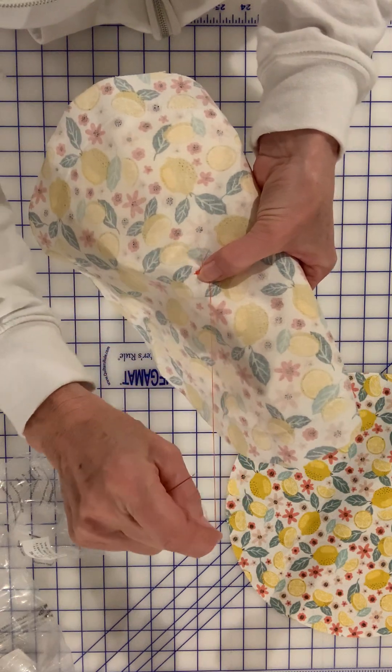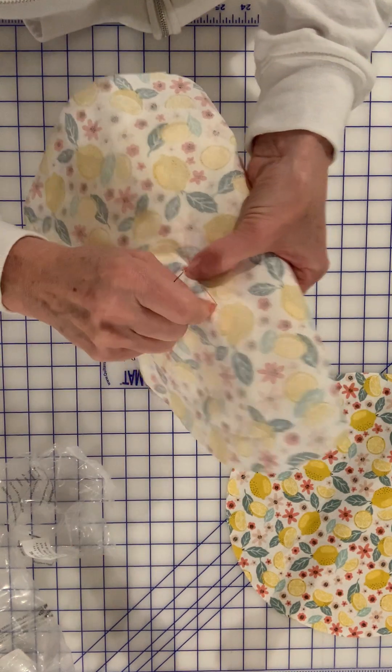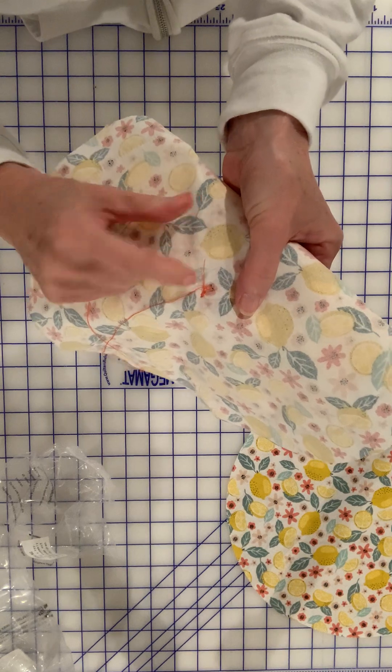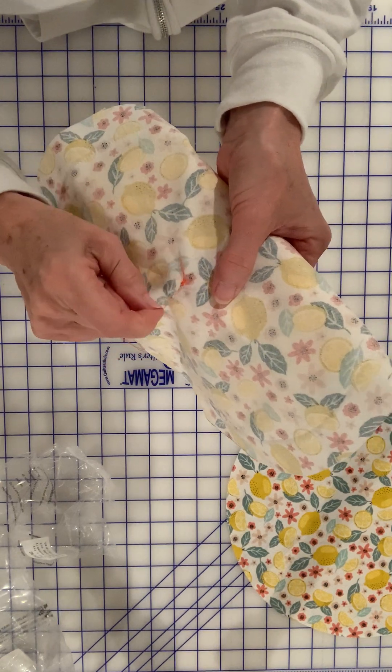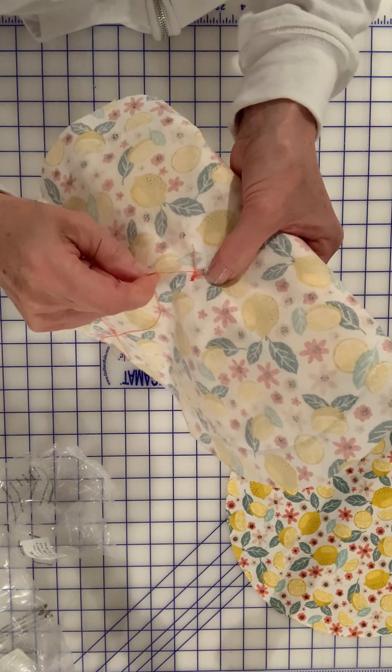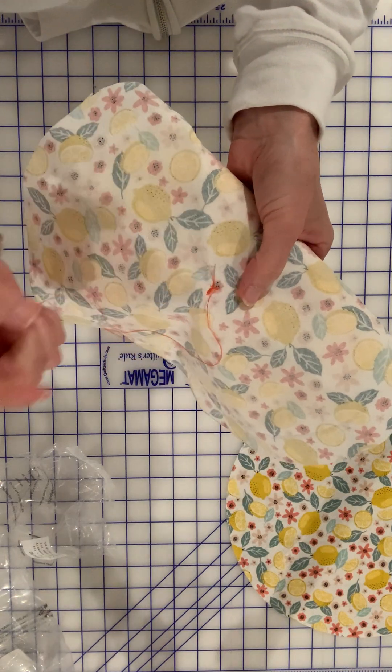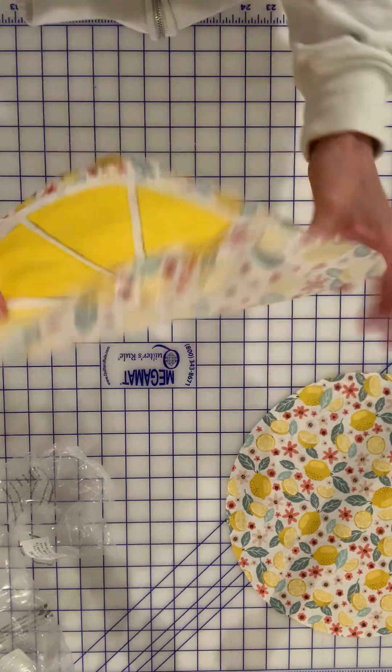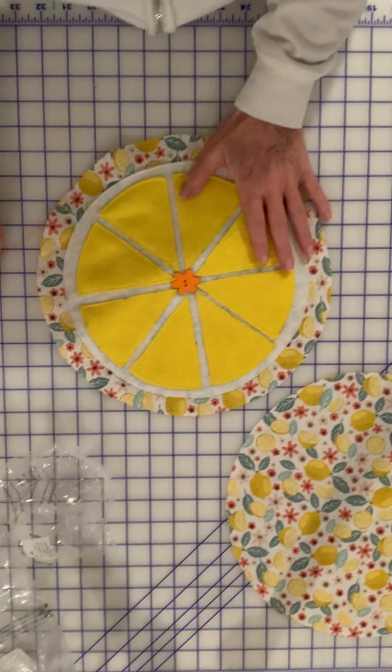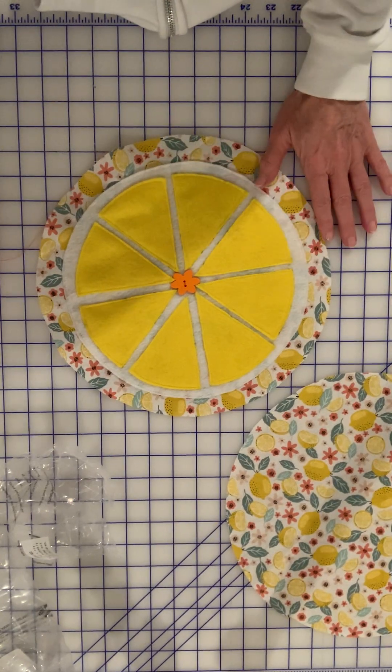It puts the knot right on top of your fabric - there we go, right on top of the fabric. You cut your thread, you're all done. So that is sewing on a button.